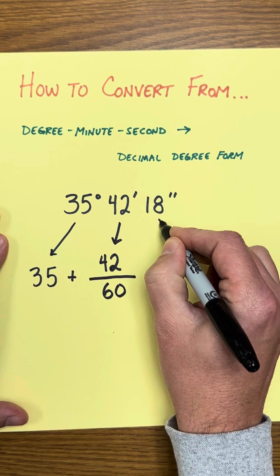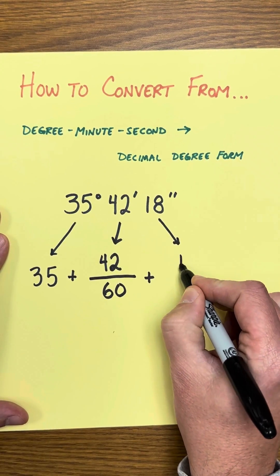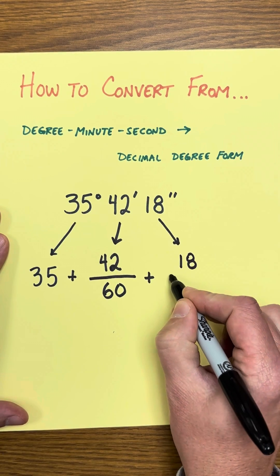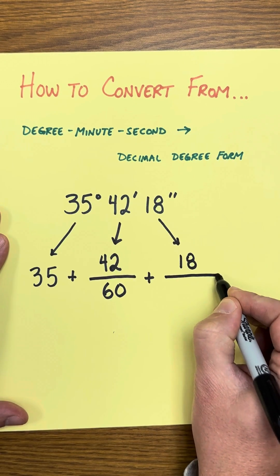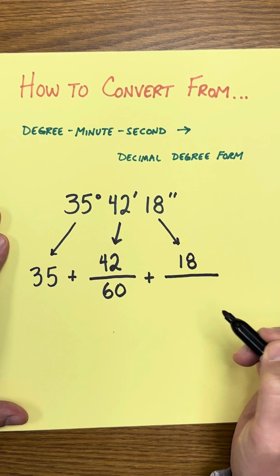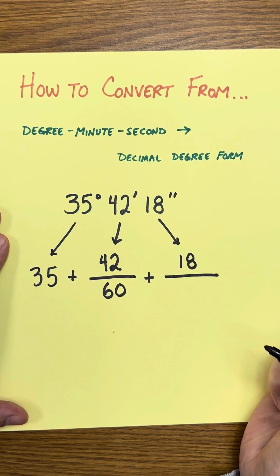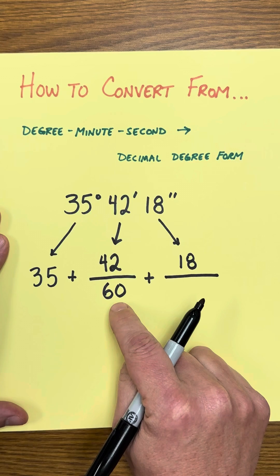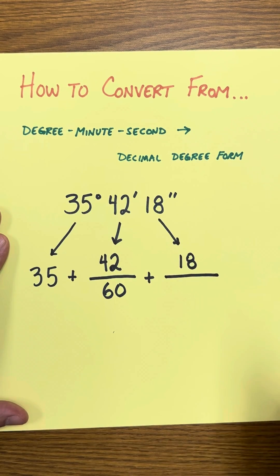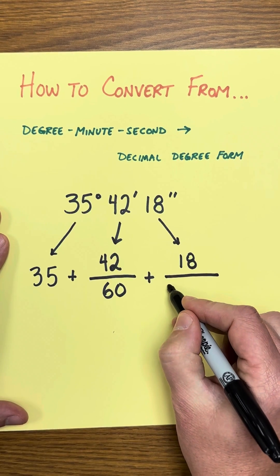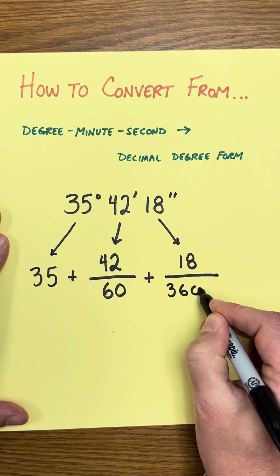And then for the seconds, I'm going to do another fraction. There's 18 seconds. Now, again, think about the clock face. Think about an hour. How many seconds are in one hour? Well, it would be 60 minutes times 60 seconds per minute. And it's 3,600.